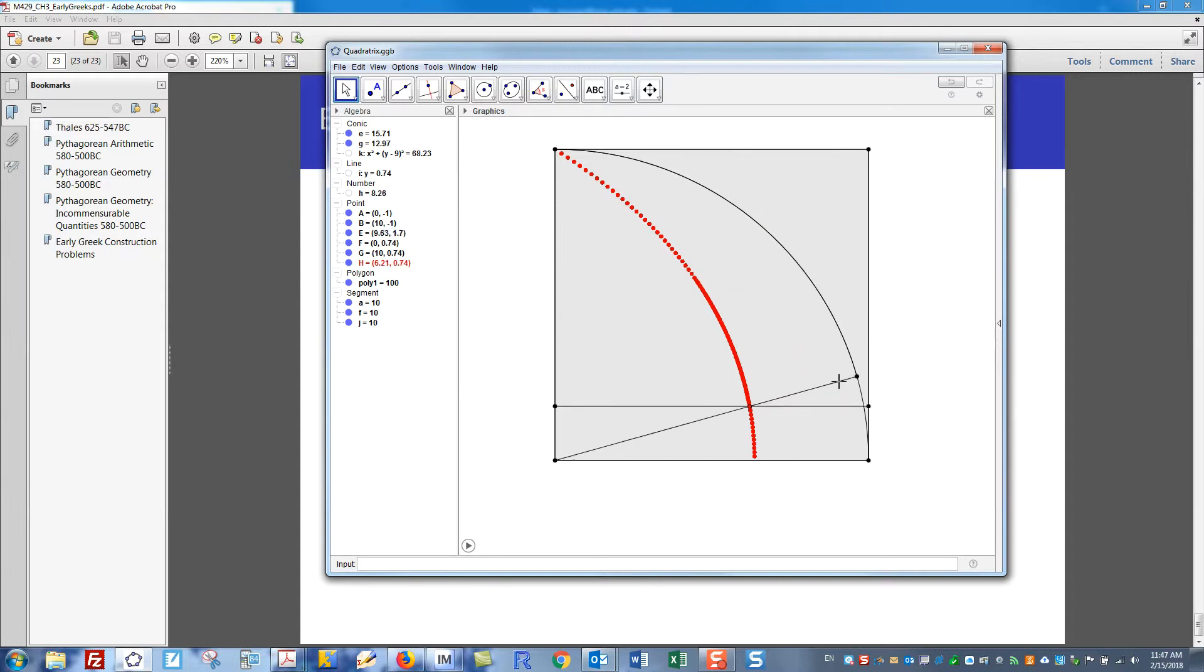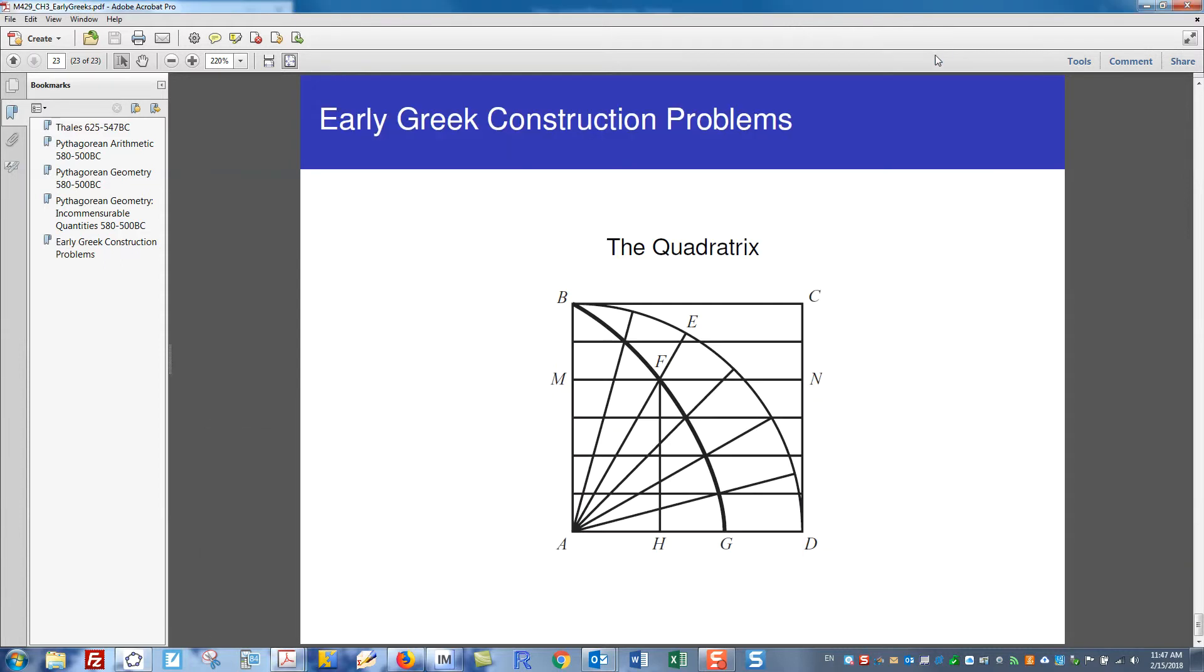Eyeballing it maybe somewhere in there, about a third of the original angle. So the idea is that it's a tool that allows you to take segments of a given length and chop them up into fractions of that segment, which will then predict fractions of angles in the same proportion.